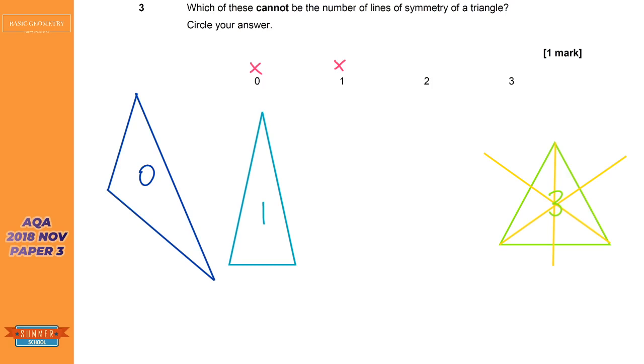And let's draw on the line symmetry so that we have a complete answer. We've got one line of symmetry there, let's just add the one there. I can't think of any triangle that has two lines of symmetry.